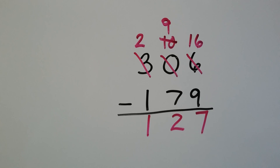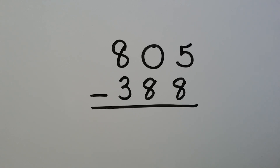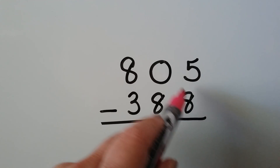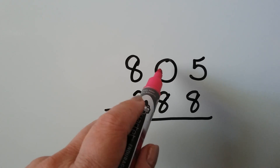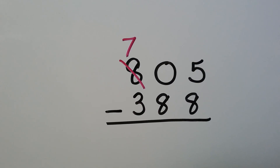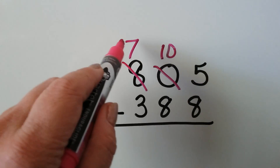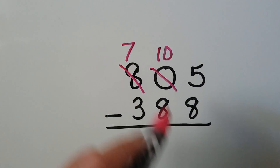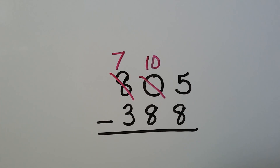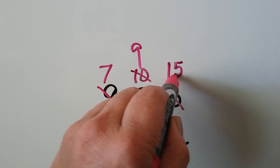We regrouped a lot, but that's okay. Let's try again. We have 805 minus 388. We have a five and we can't take away eight, and there's zero tens so we can't regroup from the tens place — we're going to have to keep going to the hundreds place. That's going to become a seven. Now instead of zero tens, we have 10 tens because 10 tens make 100. Now we can regroup and give some to the ones place. So the 10 is going to become a nine, and instead of five ones, we have 15 ones.